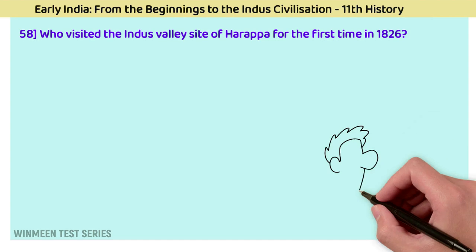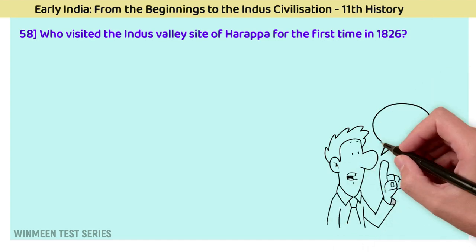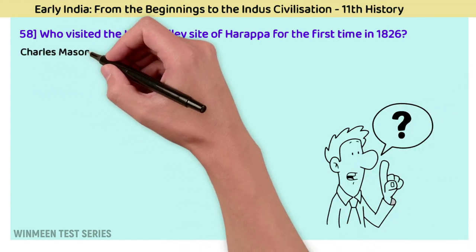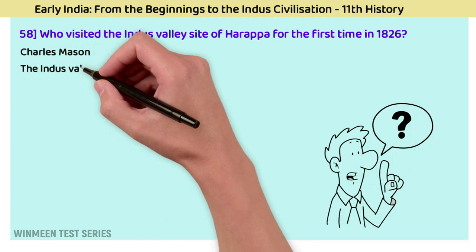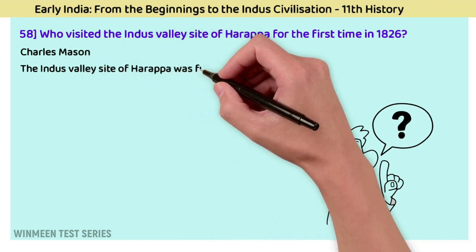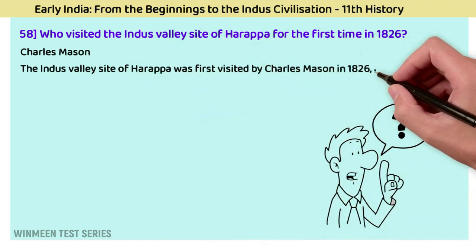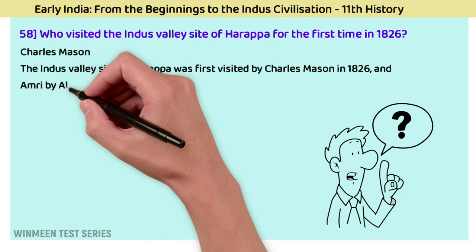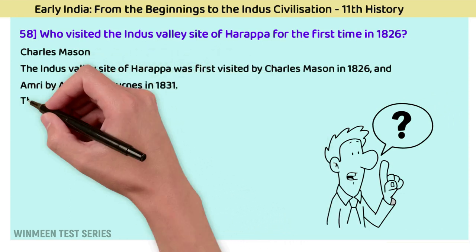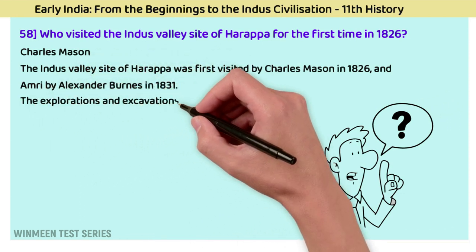Question 58: Who visited the Indus Valley site of Harappa for the first time in 1826? The answer is Charles Masson. The Indus Valley site of Harappa was first visited by Charles Masson in 1826, and Amri by Alexander Burnes in 1831. Explorations and excavations conducted after the 1950s helped understand the Harappan civilization and its nature.